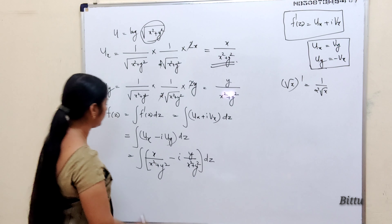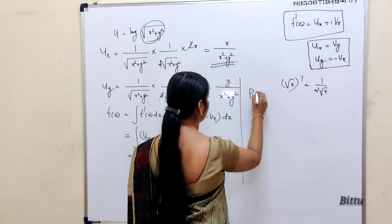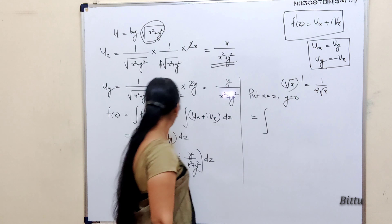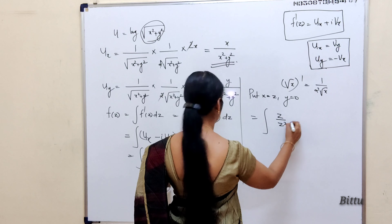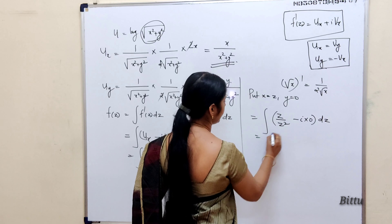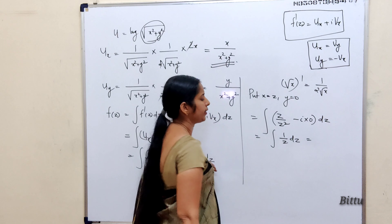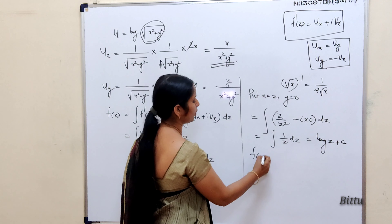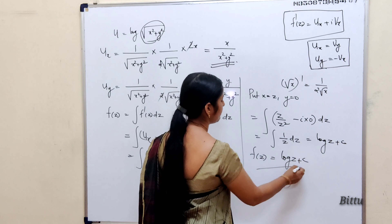Next, put x = z and y = 0. When y = 0: z/(z²+0) − i·0/(z²) = z/z² = 1/z. So it becomes integral of (1/z) dz. The integral of 1/z is log(z). Adding + c, the required analytic function is f(z) = log(z) + c.